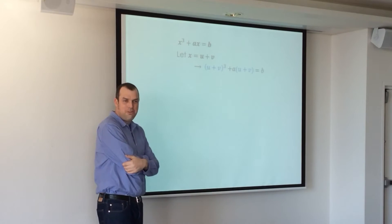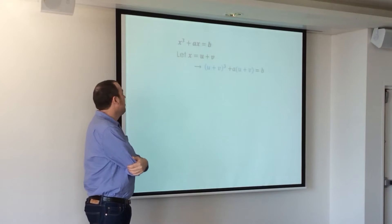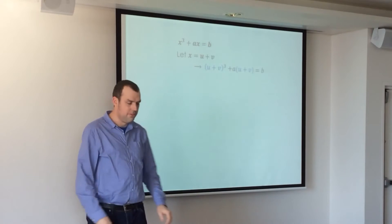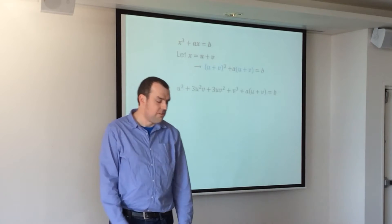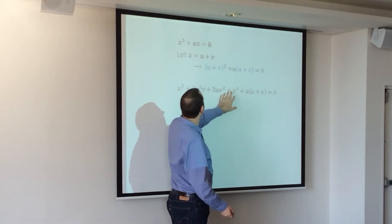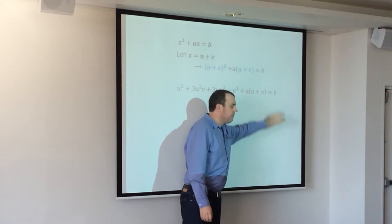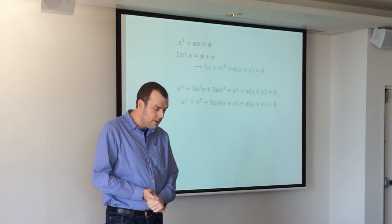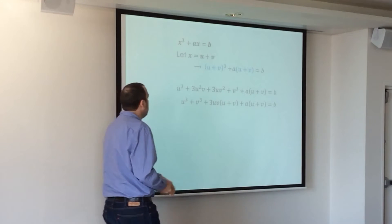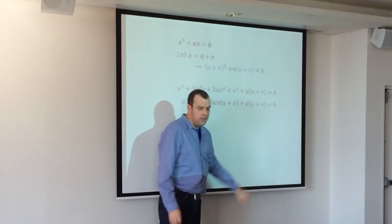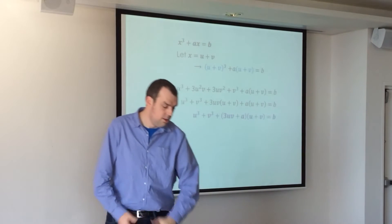We used to have one problem, now we've got two. So we let X equal U plus V. We do the substitution. We expand it. There's our cubic part, there's our linear part, and there's our B. A bit of grouping, so a bit of factorising there, and then we can see there's a common factor here.